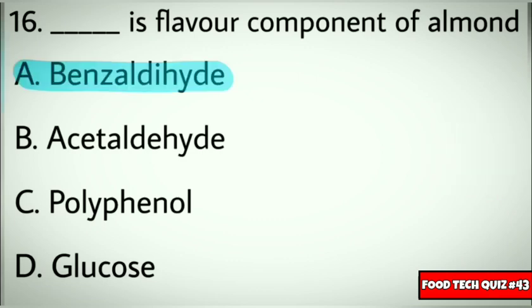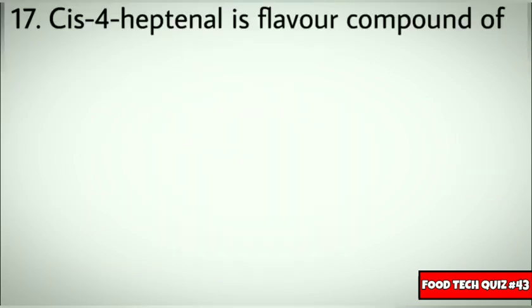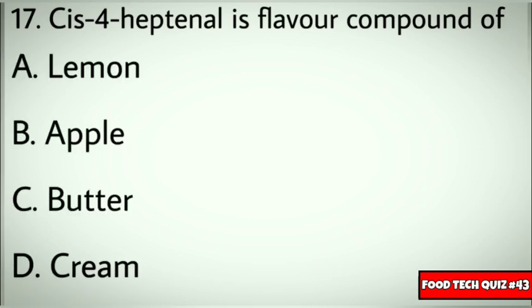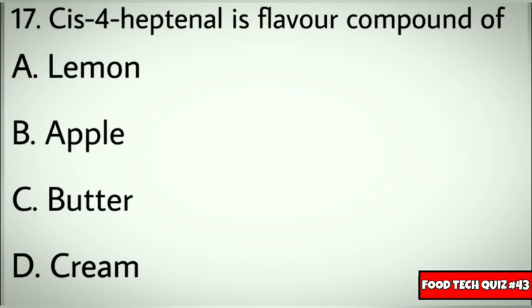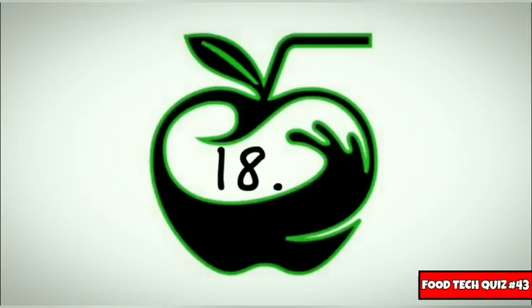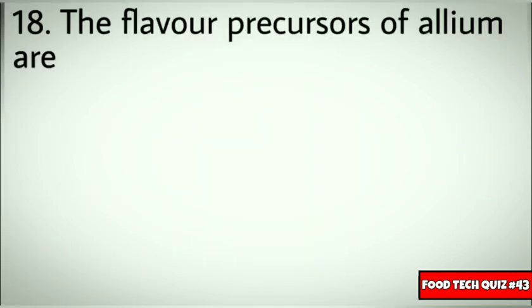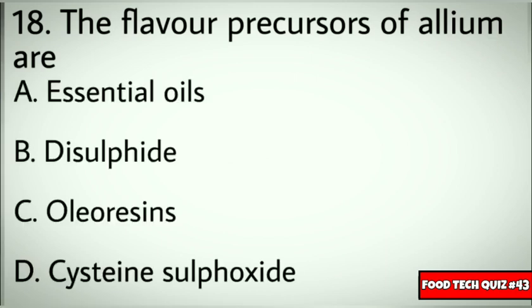Question number 17: Cis-4-heptenal is the flavor compound of? Options: A) Lemon, B) Apple, C) Butter, D) Cream. Correct answer: D) Cream. Question number 18: The flavor precursors of allium are? Options: A) Essential oils, B) Disulfide, C) Oleoresins, D) Cysteine sulfoxide. Correct answer: D) Cysteine sulfoxide.